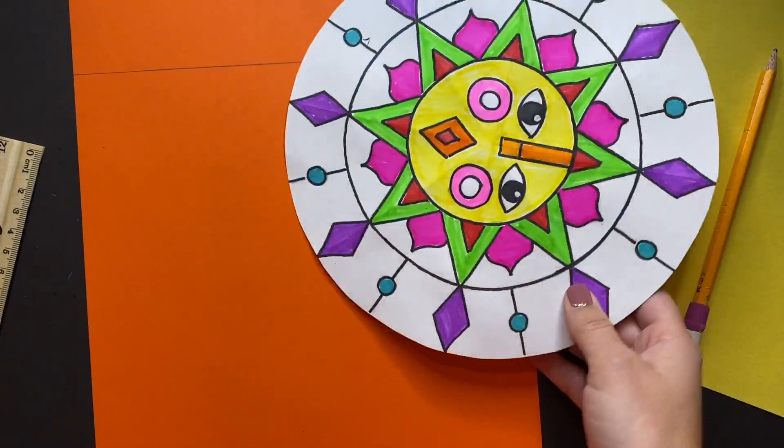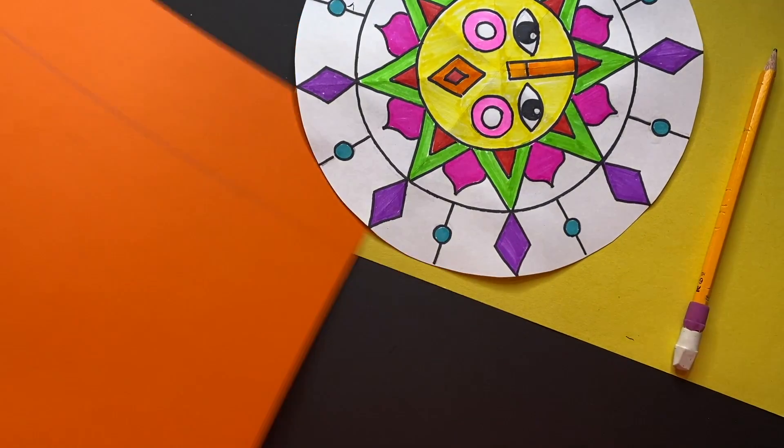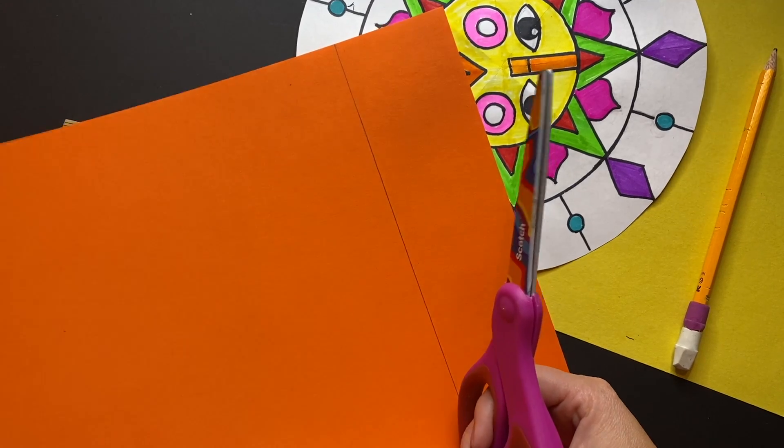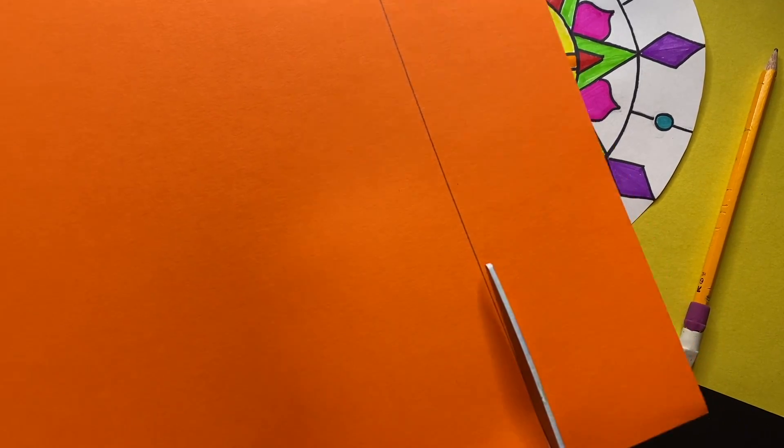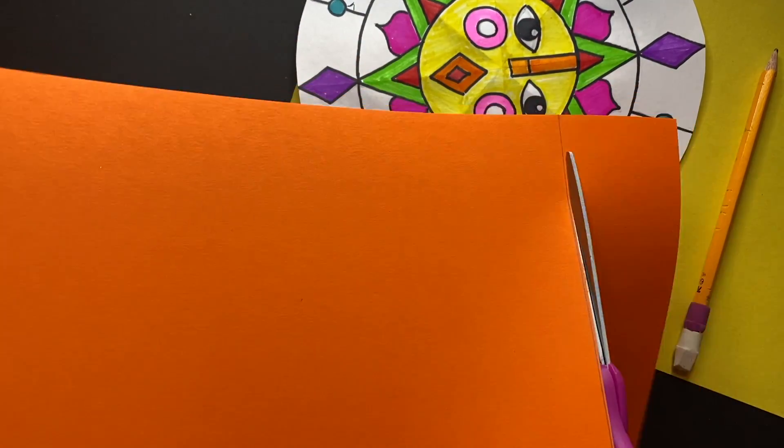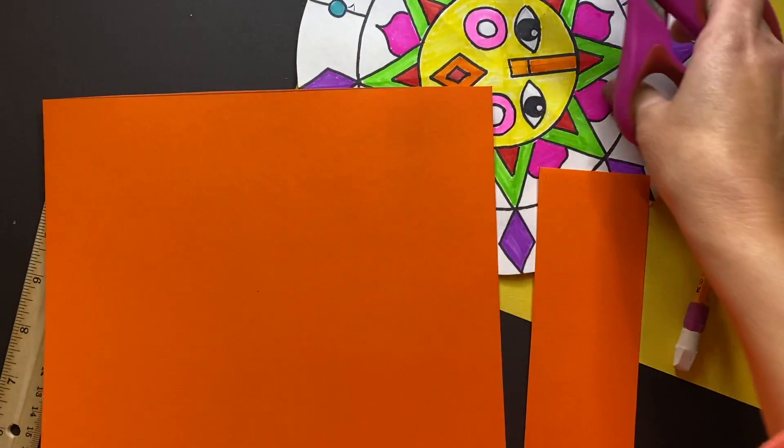We're going to create a square frame for our sun. So I like to use a ruler just to get a straight line, but feel free to use a book or just fold it and then cut a piece off. Again it doesn't have to be perfect, so don't measure it, just eyeball it.